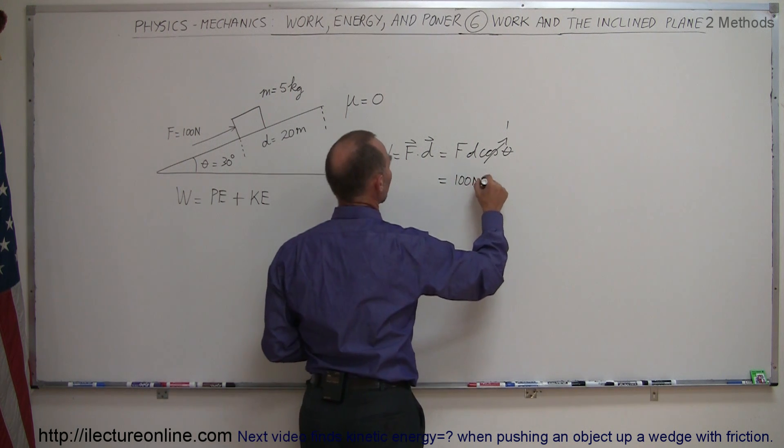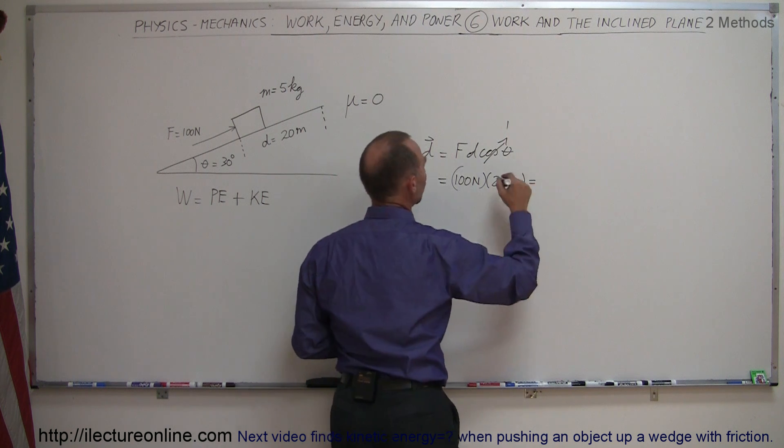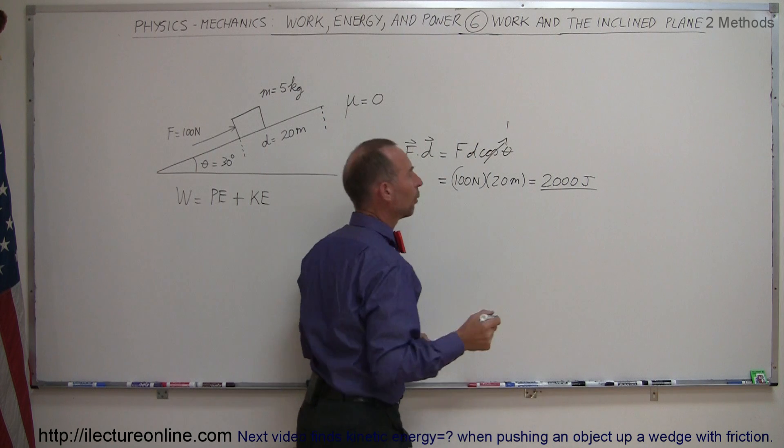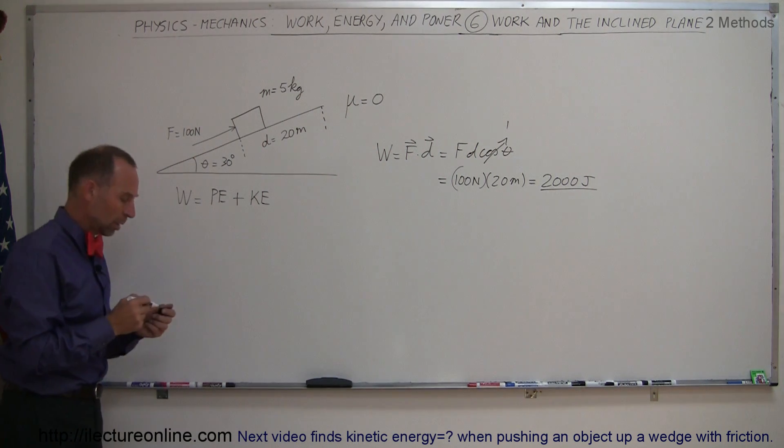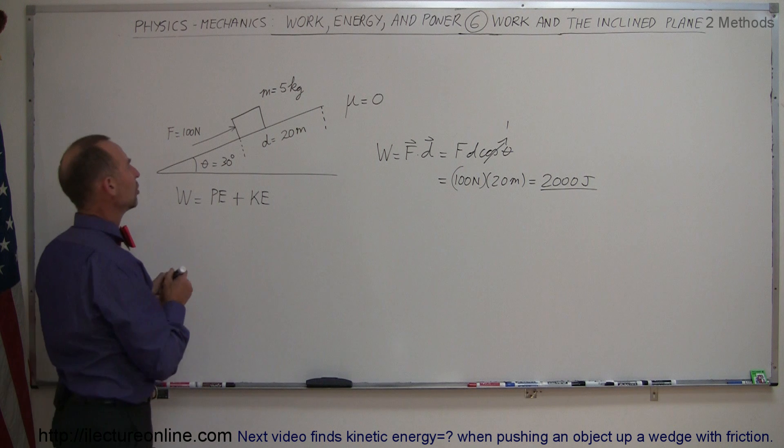So this is going to be 100 newtons times 20 meters, or 2,000 newton meters, which is 2,000 joules of work. So that's how much work the force did on the block. Let's figure out how much of that work is used to give it potential energy.